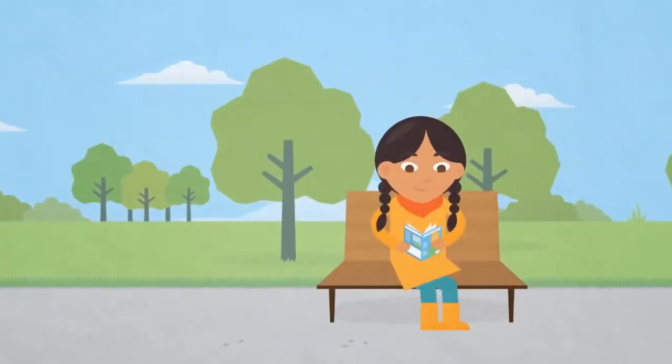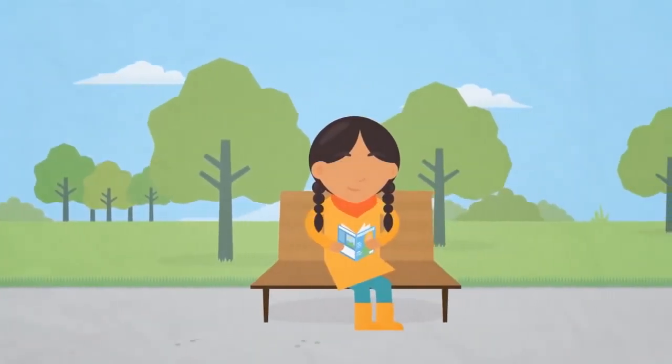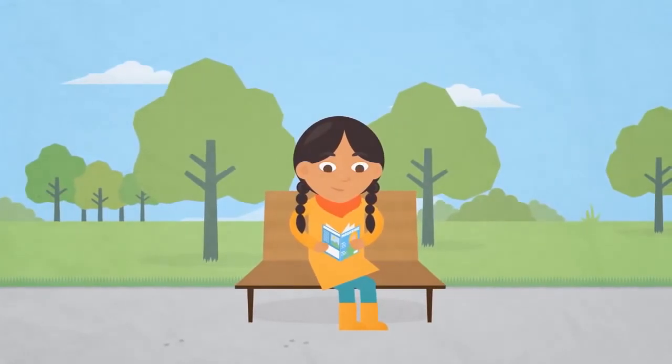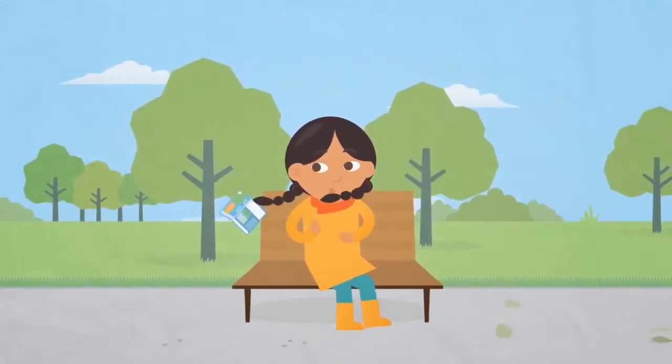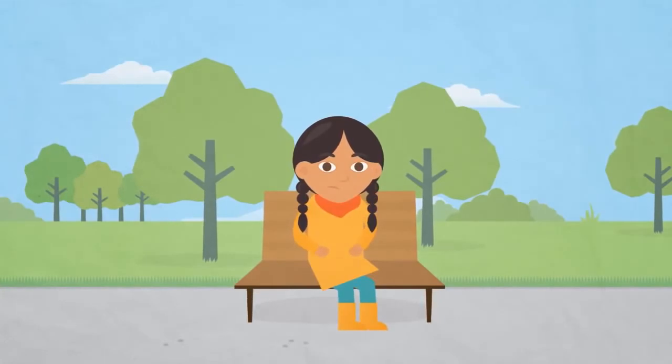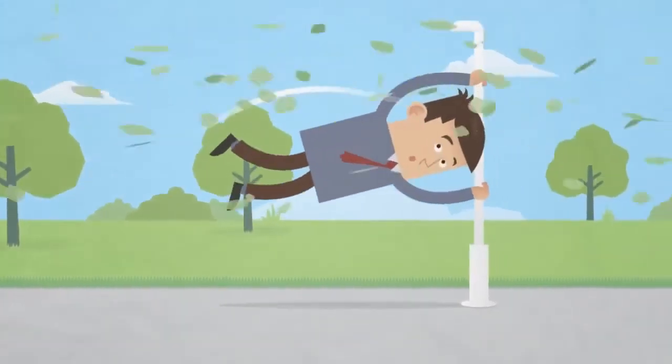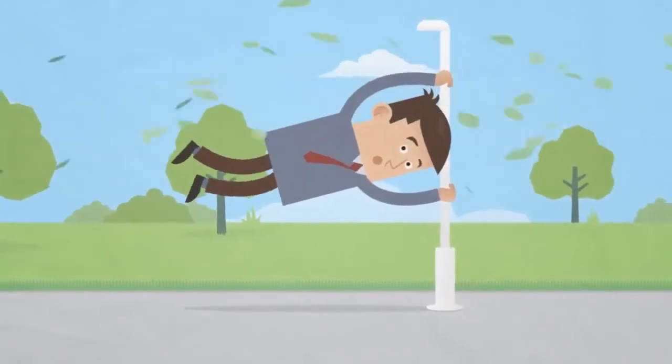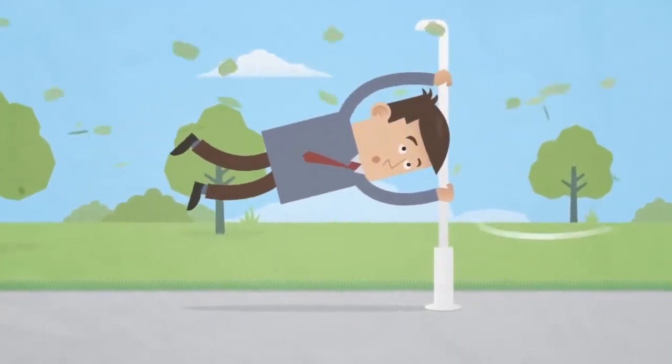We have different words to describe how fast a wind is blowing. A gust is a sudden rush of wind which can catch you by surprise. A gale is a very powerful wind. It can be hard to stand up in a gale and it is best to stay indoors.